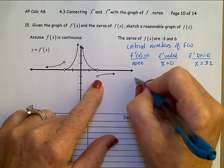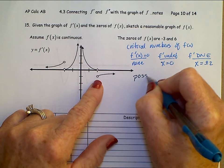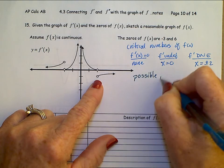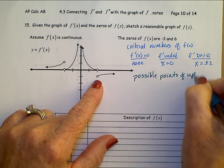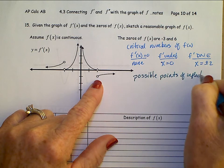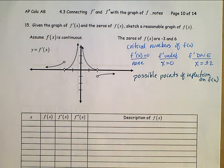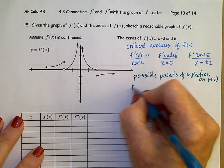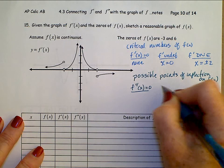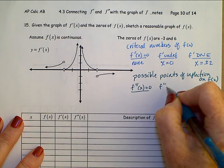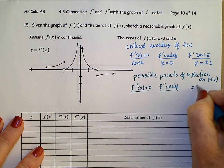So f prime does not exist when x is plus or minus 2. We also need to look for possible points of inflection on f of x, and where that's going to occur is where f double prime is equal to 0, f double prime of x is undefined, or f double prime does not exist.